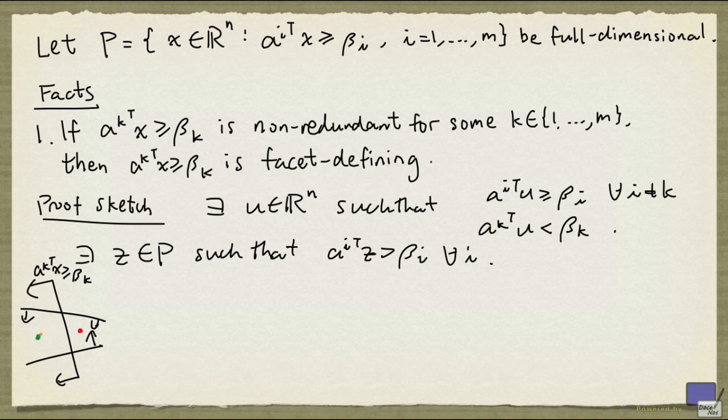So our U will be somewhere here, and our Z will be somewhere here. What we're going to do is, we're going to look at the intersection of the line segment between U and Z, with the boundary of the half space defined by this inequality. And we'll call this point x'. So x' is the intersection of the line segment between U and Z, with the hyperplane defined by this equation.